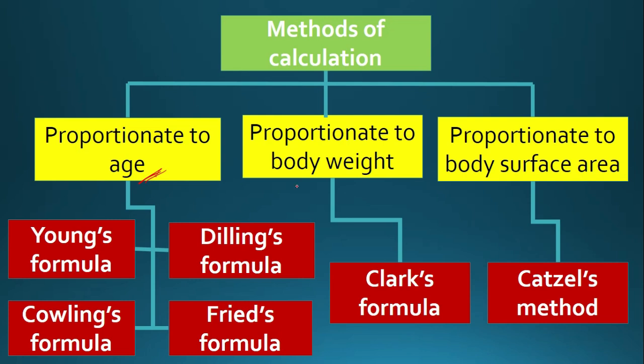For dose calculation proportionate to body weight, the correct formula is Clark's formula. Clark's formula is used for finding the dose of a child based on body weight. For dose based on body surface area, we use Catzel's method.